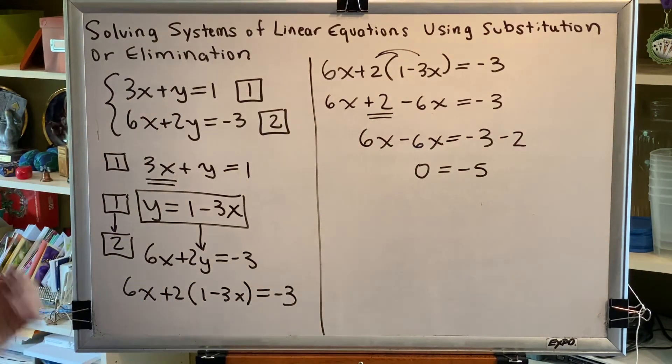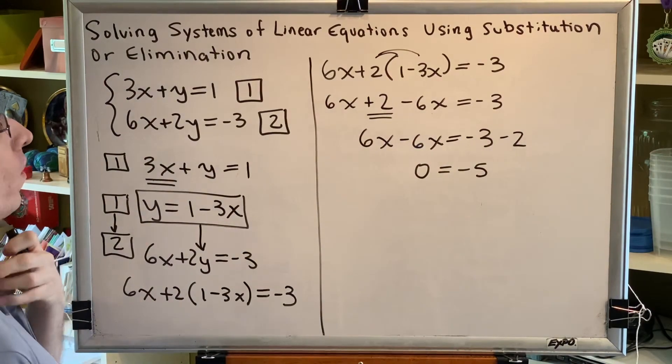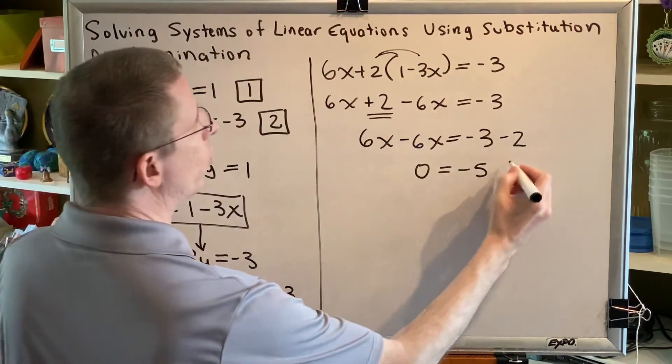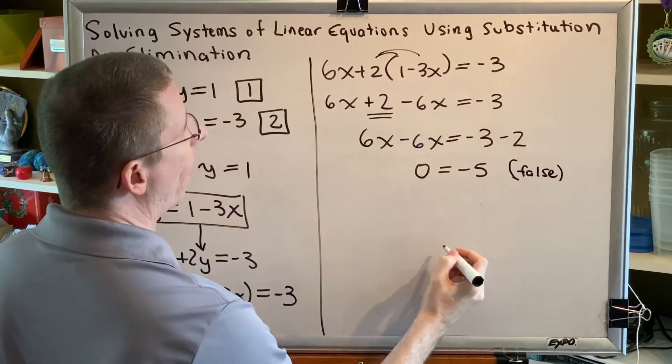Notice that all of our variables have been eliminated from our problem. They have all canceled out. And the statement we are left with is a false statement. In math we call that a contradiction.